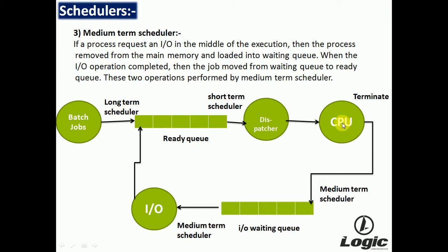When the CPU completes execution of a process, the process is terminated. But when a process requests an I/O device and the device is not available, the process is transferred to the I/O waiting queue by the medium-term scheduler. When the I/O device becomes available, that process is transferred from the I/O waiting queue back to the ready queue by the medium-term scheduler.